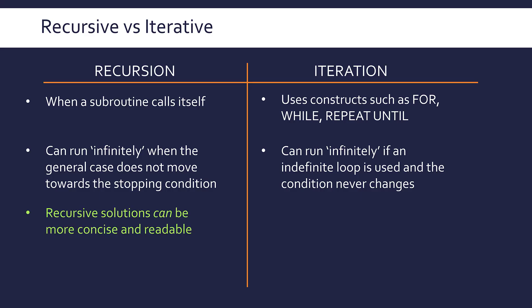In terms of positives, recursive solutions can be — and often are — more concise and readable than iterative solutions, particularly if the problem lends itself to a divide and conquer approach. Something like merge sort fits really well with recursion and so the solution is more concise than the iterative version. Of course you could write awful recursive code, but if it's done well it can be really short and really readable.